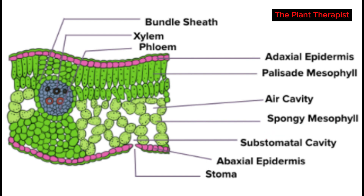Parenchyma tissue with chloroplasts is called chlorenchyma. Chlorenchyma tissue is found in the outer part of the stems of herbaceous plants as well as in leaves. Inside the leaf, the surface of mesophyll in contact with the air is moist. If the moisture level decreases below a certain point, the stomata close, significantly reducing further drying out of the leaves.